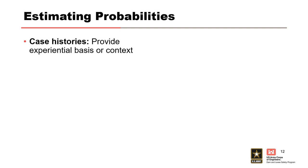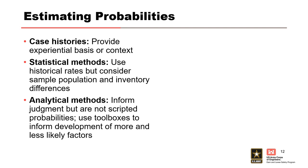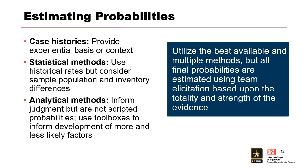There are three methods to help inform judgment when developing a list of more and less likely factors and estimating probabilities of failure for each event in the event tree. Case histories provide historical context for conditions that lead to development of internal erosion incidents and failures. Statistical methods using historical rates provide some degree of ground truth or empiricism, but they must be used with caution as they may not apply based on how they were developed and the sample population or inventory used. There are several analytical methods available that can inform judgment, though results should be used to develop more and less likely factors. When estimating probabilities, the use of multiple methods is encouraged, but not all may be given equal weight depending on project-specific factors.